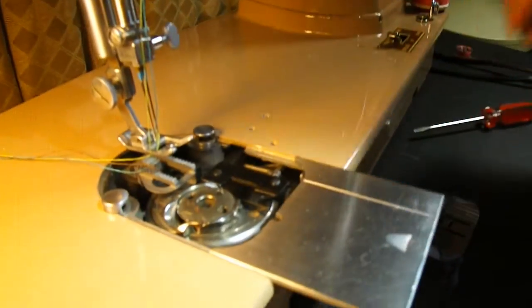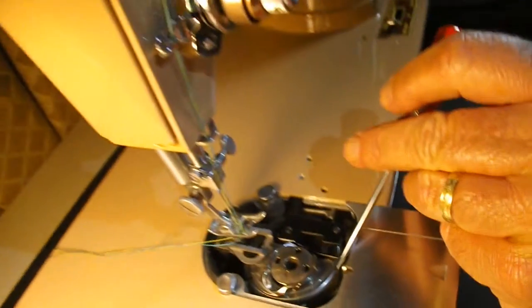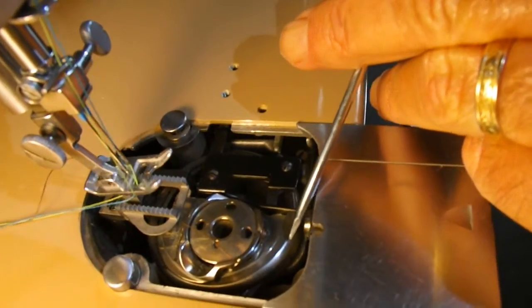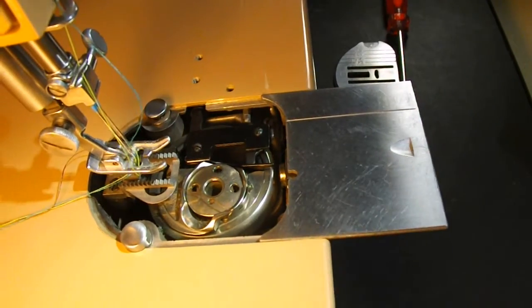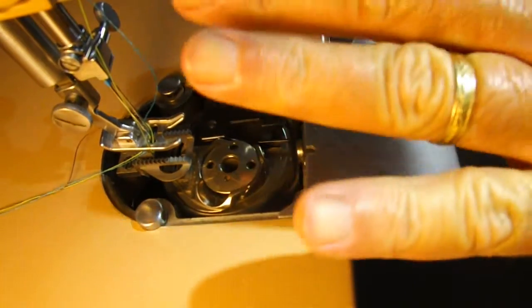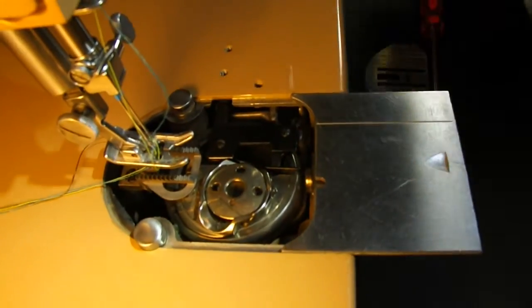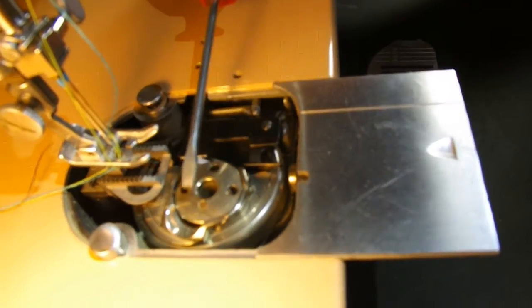This is the rotary hook down here. So there's a hook on that. It comes around and grabs the thread at the back of the needle. And even though you've got double thread and double needles up above, you're still only going to use your one thread on the bobbin.